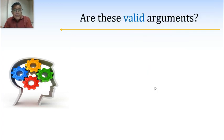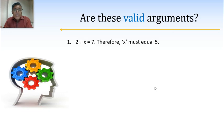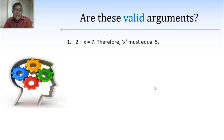Sometimes it's not so clear when an argument is actually deductive — when reasons actually prove a certain conclusion versus when they just imply it. So let's take a look at a few examples, and you tell me if you think the argument is a valid deductive argument. If I tell you 2 plus x equals 7, therefore x must equal 5 — the first sentence gives you premises, reasons to believe the conclusion. Is this a valid deductive argument? In this case it is, because if 2 plus x equals 7, then x must equal 5. That's what deductive means: the conclusion has to be true given the premises.